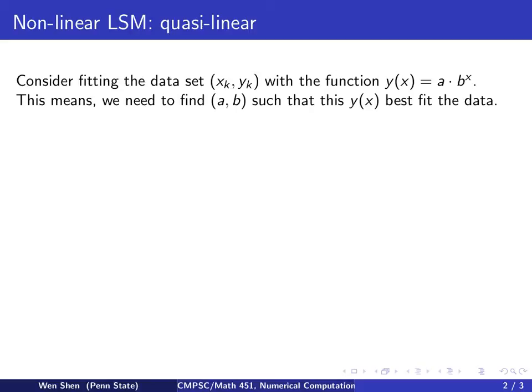So before we proceed, we would like to do some manipulation and change this in some way that a and b enter the function in a linear way. So if we take the natural log on both sides, we see that now we have the new relation which is equivalent to the old one: natural log of y equals log of a plus x times log of b.